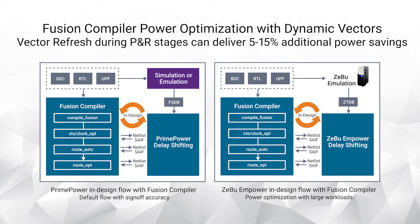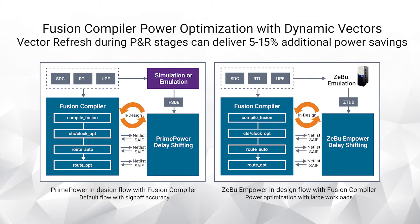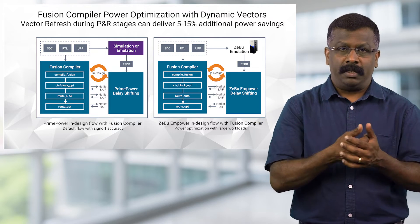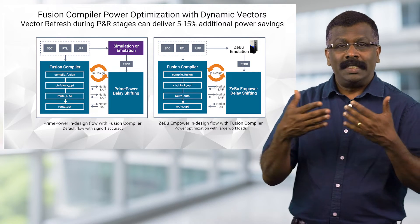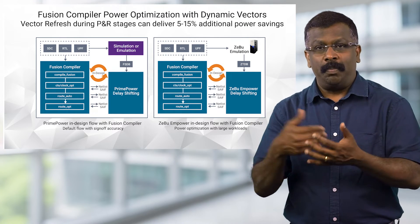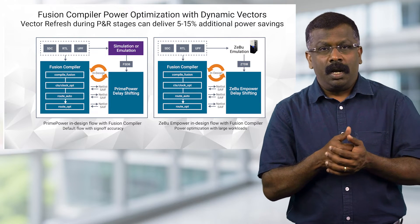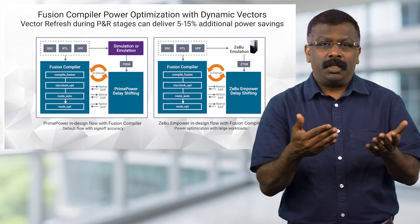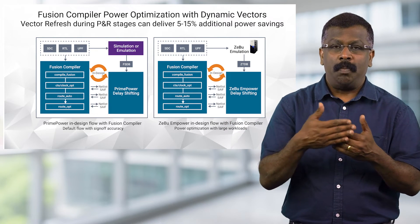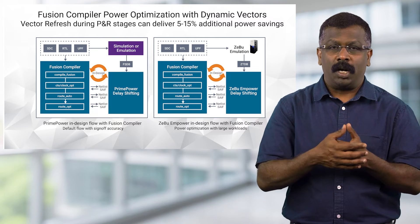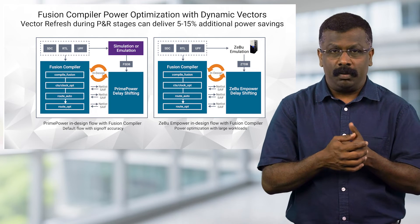Since the whole optimization process from synthesis to place and route is under user control, we can introduce a diversion in the flow to refresh the vector through either PrimePower or ZeBu M-Power based vector generation. Refresh methods could be either PrimePower-based or M-Power-based depending upon the type of workload you wish to optimize on.